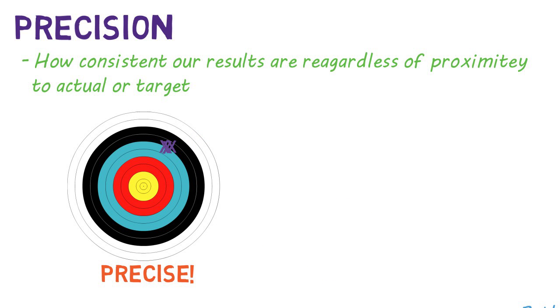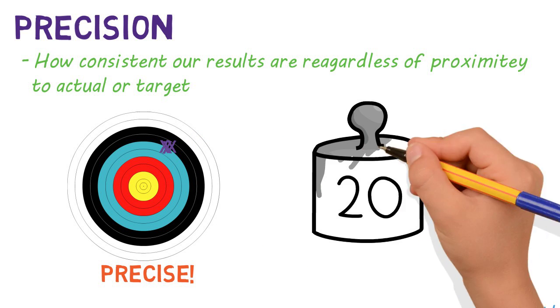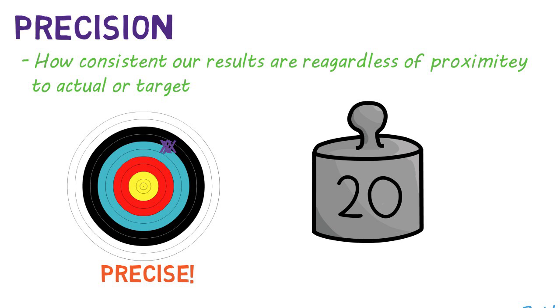Using the scale and a 20kg dumbbell example, getting measurements of 23.11, 23.09, and 23.12 for the three trials would tell us our scale is precise, just not accurate. It's consistently inconsistent.